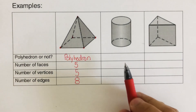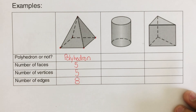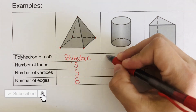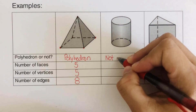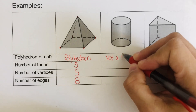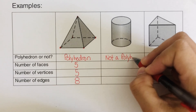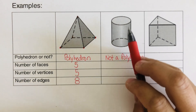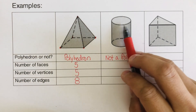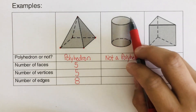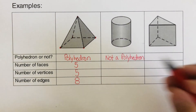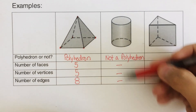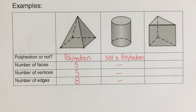Now let's move on to the next one. This is not a polyhedron. The reason for this is it is not made up of straight edges — this is not a straight edge. So we just leave this blank; we're not going to fill this up if it's not a polyhedron.